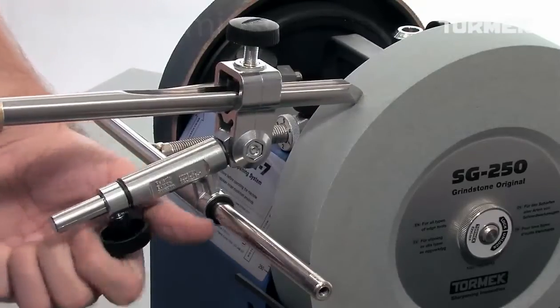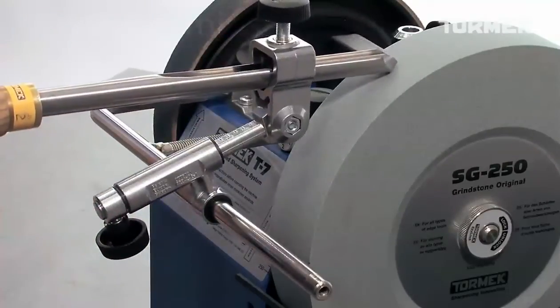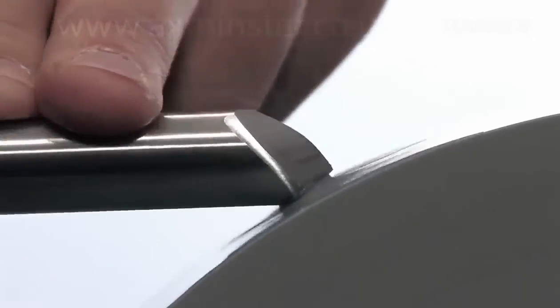If you want a rounded back, you can easily grind off the heel of the bevel. Just unscrew the back knob and allow the tool holder to move forward.